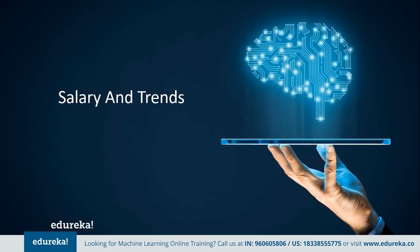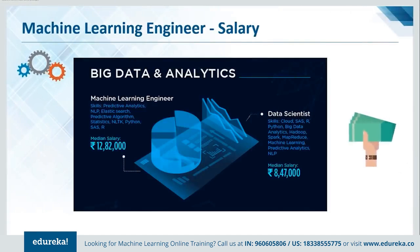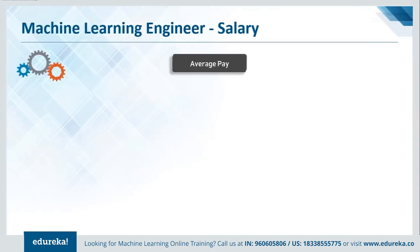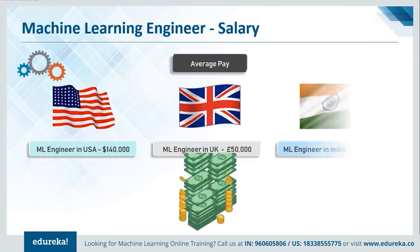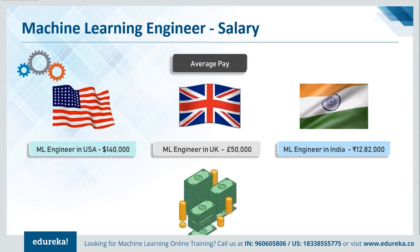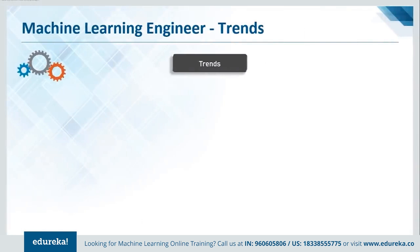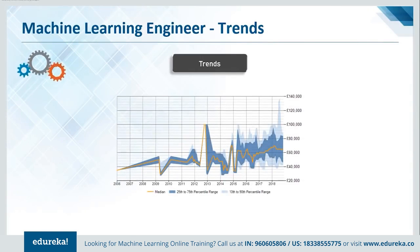Now for salaries and trends. As a fresher, there is a median salary of almost 13 lakhs and rising for a machine learning engineer — one of the trendiest jobs as per a survey conducted earlier this year. A machine learning engineer in the USA gets an annual pay of about $140,000, about £50,000 in the United Kingdom, and about 13 lakhs in rupees in India. Looking at the trend chart, it keeps going up — your value as a machine learning engineer will keep increasing, and you can make a lot of money.